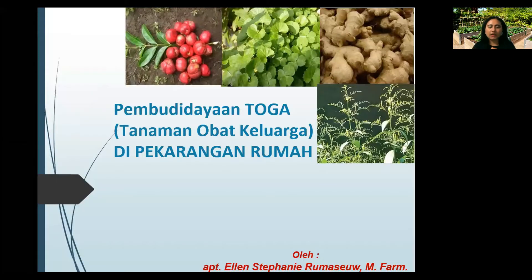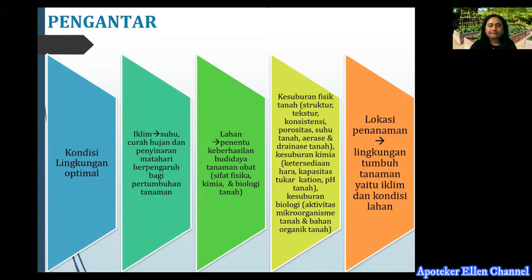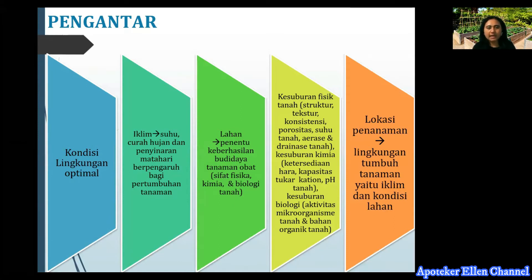Pembudidayaan toga atau tanaman obat keluarga di pekarangan rumah. Kita akan membahas bagaimana kondisi lingkungan optimal yang cocok untuk membudidayakan tanaman obat keluarga. Yang pertama yang mempengaruhi adalah iklim — terdiri dari suhu, curah hujan, dan penyinaran matahari yang berpengaruh bagi pertumbuhan tanaman. Selain itu, apa saja faktor penentu dalam pembudidayaan toga di rumah?